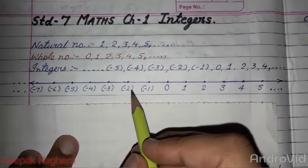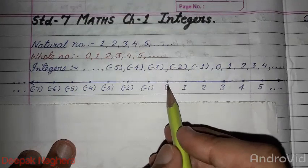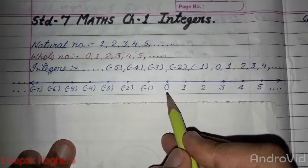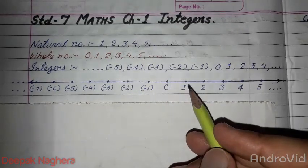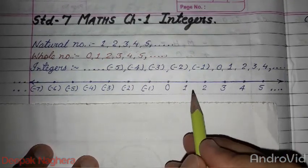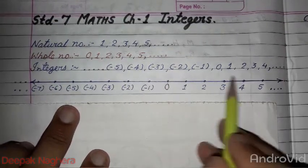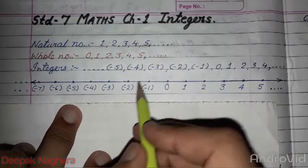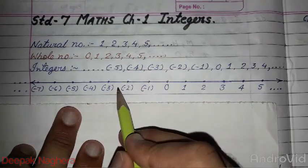So we have seen here that integers include all the numbers: all the positive numbers, all the negative numbers. Now, zero is neither negative nor positive, because zero means nothing. Nothing means not positive, not negative. All positive numbers and all negative numbers together form integers.